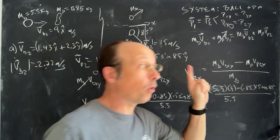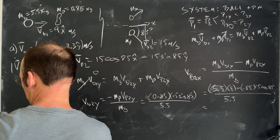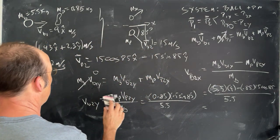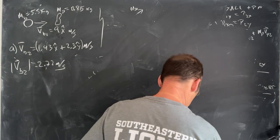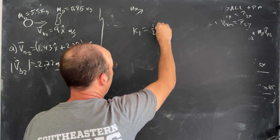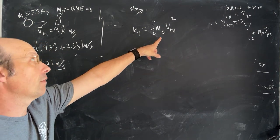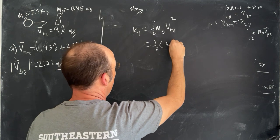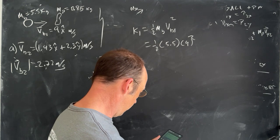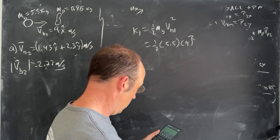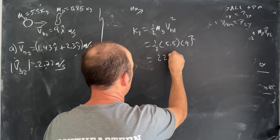Now, is this an elastic or inelastic collision? To answer that, we need to compare kinetic energy before and after the collision. Let's calculate the kinetic energy before: it's one-half times the mass of the ball times the velocity squared — 0.5 times 5.5 times 9 squared. I get 222.75 joules.